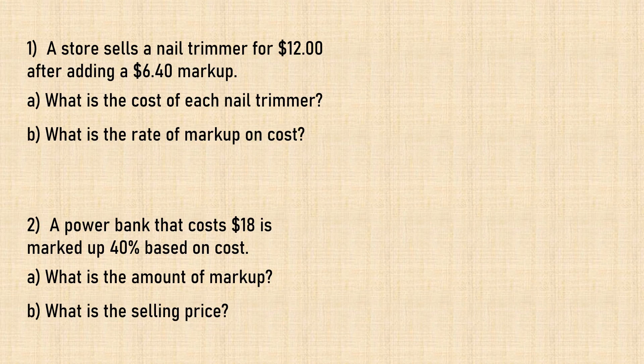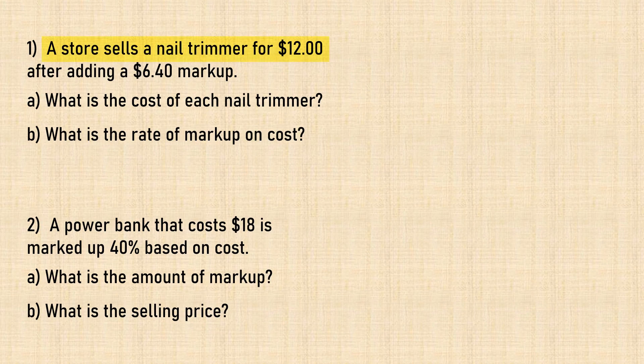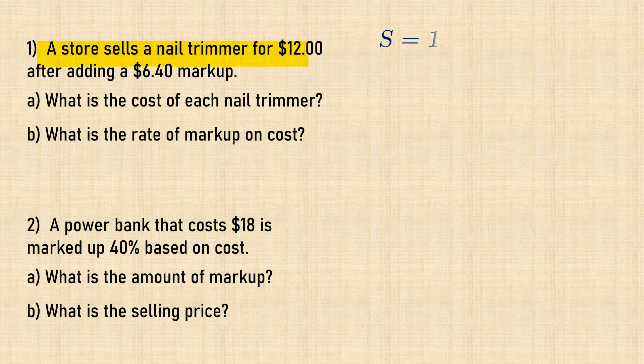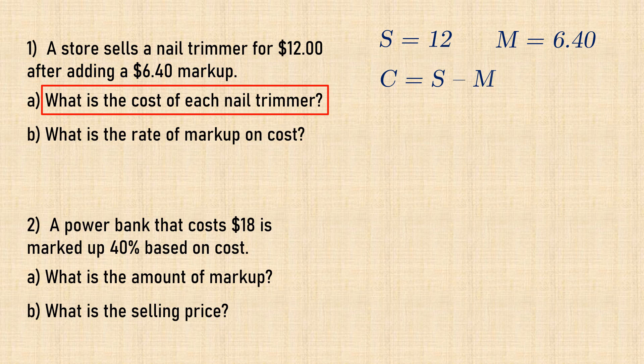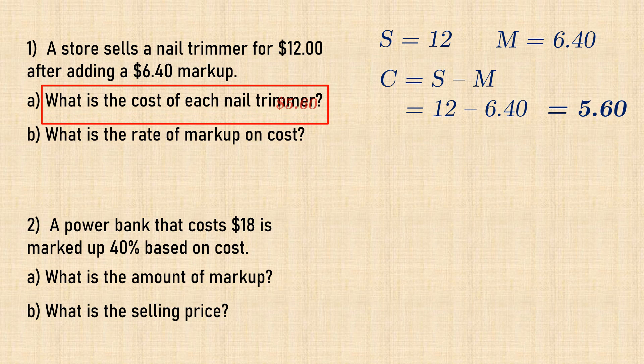Now let's solve some problems. In number 1, a store sells a Nail Trimmer for $12 after adding a $6.40 markup. In part A, we want the unit cost, which is Selling Price minus Markup, and that would be 12 minus 6.4, which gives $5.60.